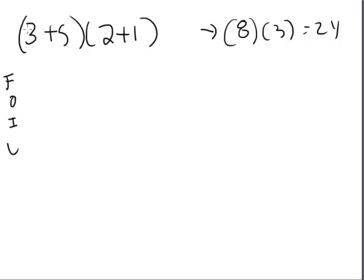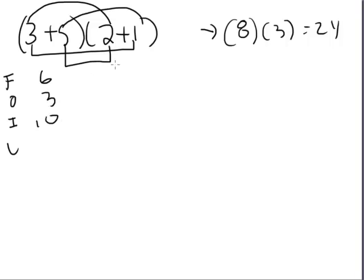Let's not simplify it. Let's use FOIL and see if FOIL really works. The firsts are 3 times 2, or 6. The outers, 3 times 1, or 3. The inners, 5 times 2, or 10. And the lasts, 5 times 1, or 5. Let's add these up. You get the exact same number. 6 plus 3 plus 10 plus 5 equals 24.